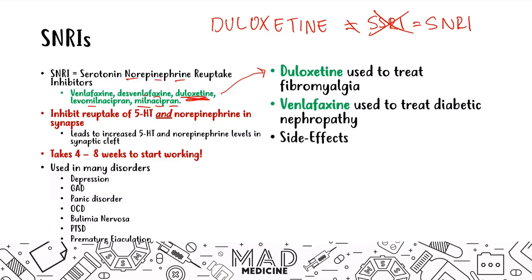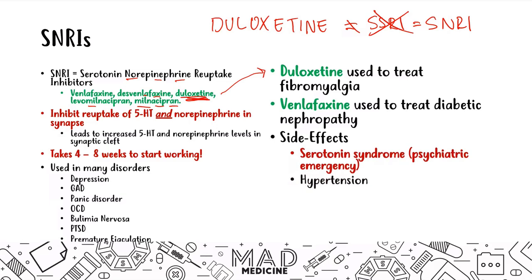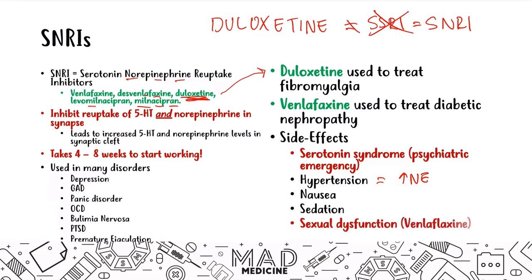The side effects are also very similar to SSRIs — like serotonin syndrome — but you're also going to get hypertension because you're increasing norepinephrine. Keep that in mind: increased norepinephrine can lead to hypertension. You'll also see nausea, sedation in certain cases, and sexual dysfunction. Sexual dysfunction is highest with venlafaxine, so if someone is using venlafaxine, watch out for that.